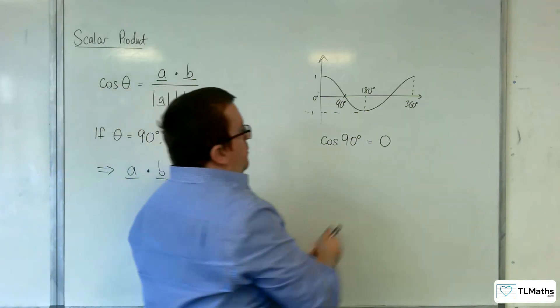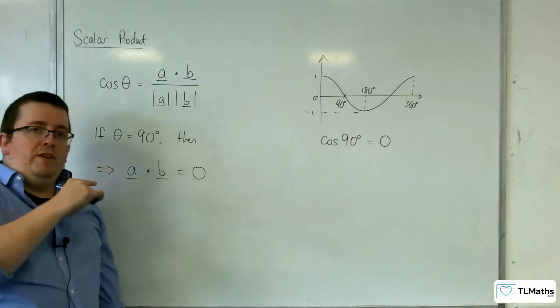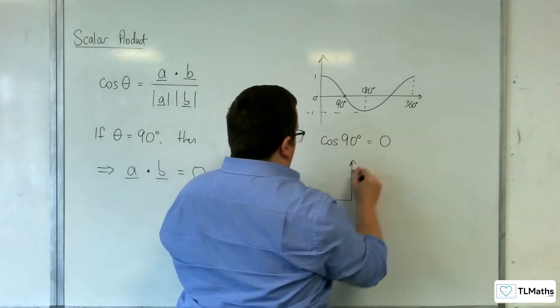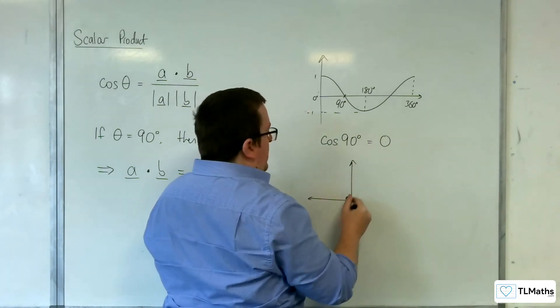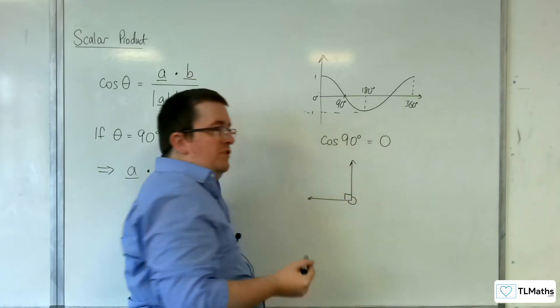Now you might also be thinking it could be 270 degrees, couldn't it? But if you counted the reflex angle, it would be like saying, what's the angle between these two vectors? And instead of saying it's 90 degrees, you're saying it's 270 degrees.